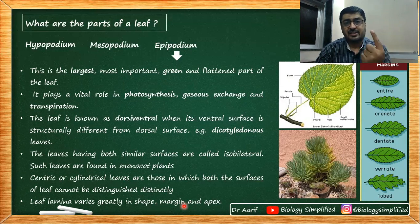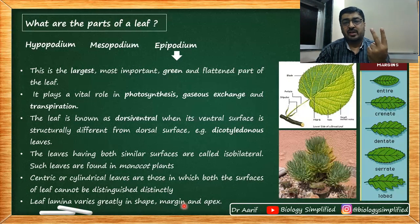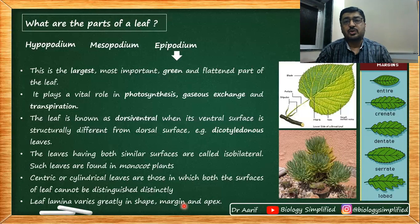So we have covered the characteristics of a leaf and the parts of a leaf — hypopodium, mesopodium, and epipodium. In the next video, we will take up three important features of the leaf. Thank you all so much.